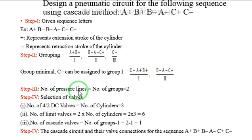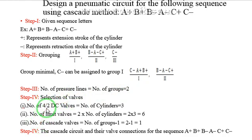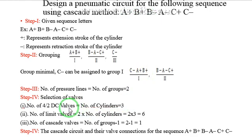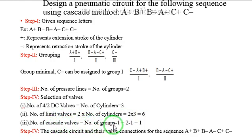Step 3: we have to identify the number of pressure lines. Number of pressure lines equals number of groups. Number of groups is 2, so 2 pressure lines are required. Step 4: selection of valves — three kinds: direction control valve, limit valve, and cascade valve. Number of direction control valves equals number of cylinders, which is 3 — cylinders A, B, C — so three direction control valves are required. Number of limit valves equals 2 times the number of cylinders: 2 × 3 = 6 limit valves required. Number of cascade valves equals number of groups minus 1: 2 − 1 = 1 cascade valve.